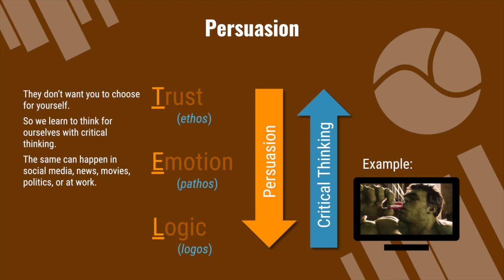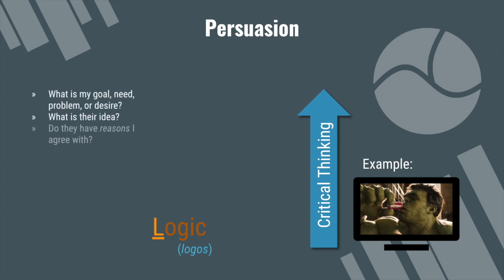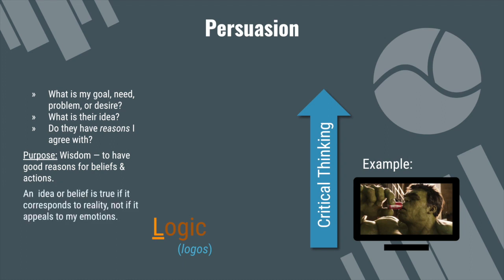So what does the critical thinker do? The critical thinker goes in the reverse direction — start off with logic. What is my goal, need, problem, or desire? What is their idea? Do they have reasons that I actually agree with? The purpose here is wisdom. I want to have good reasons for beliefs and actions. An idea or belief is true if it corresponds to reality, not if it appeals to my emotions.